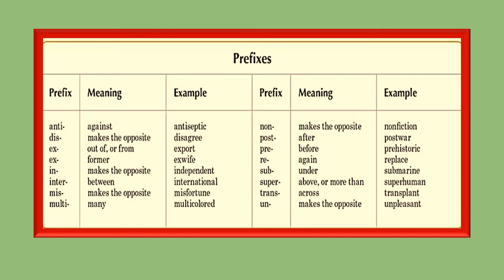This is the table of prefixes, their meanings, and an example of each. For example, the first one: 'anti', meaning 'against' — for instance, 'antiseptic' means against septic.